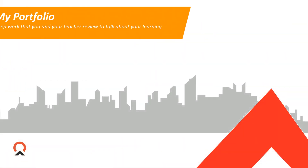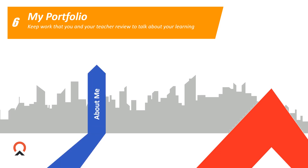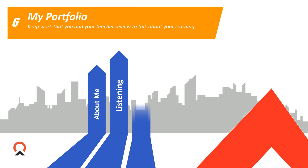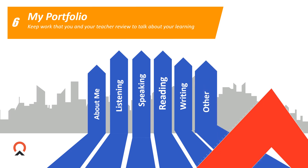My Portfolio is the most important section in your binder. It includes six small blue sections: About Me, Listening, Speaking, Reading, Writing, and Other.